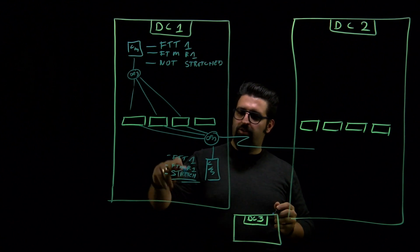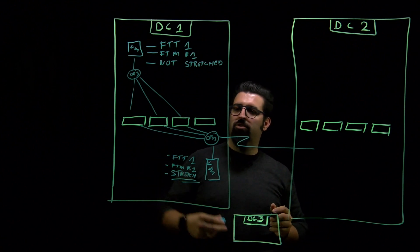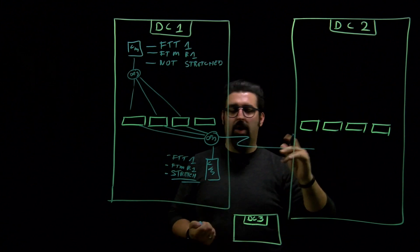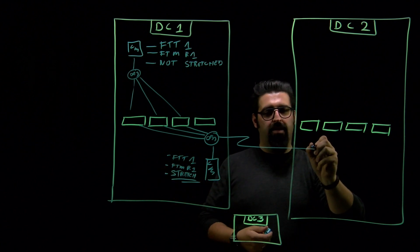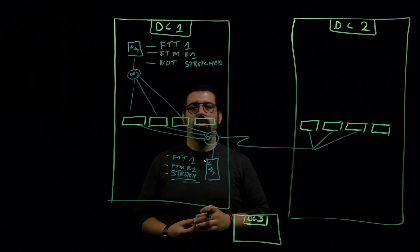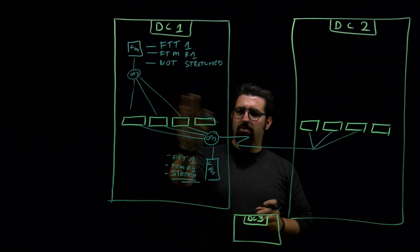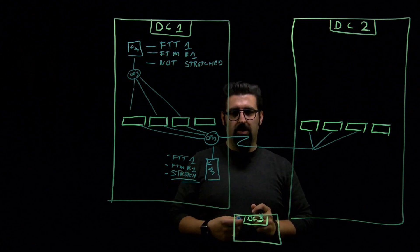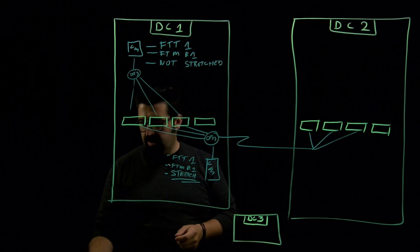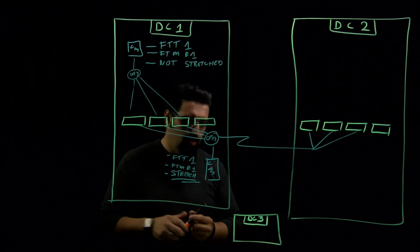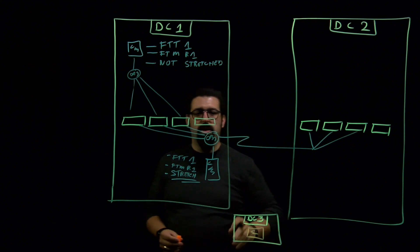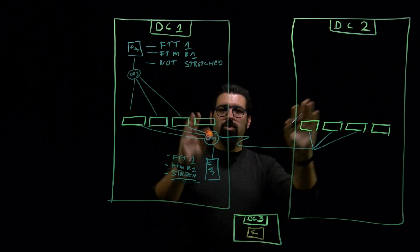Now we have a stretched cluster but we would like to comply with those rules as well. If this side fails, we want to have the same copies on this side. FTT of 1 means I need to distribute my data again over those different hosts. Now if one thing fails, there is no issue. Well no issue, I still have one piece missing. I have a missing link here and that missing link would be a witness. That witness is there to be the referee when one of those fail.